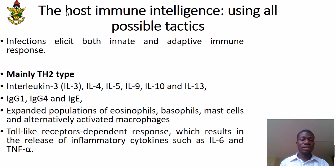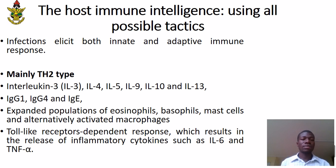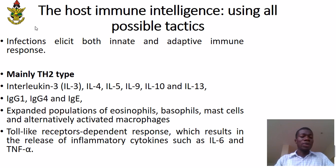Filarial infections are able to elicit both innate and adaptive immune responses. They elicit mainly the TH2-type immune response, with increased production of interleukins 3, 4, 5, 9, 10, and 13. Infections are also characterized by increased production of IgG1, IgG4, and IgE, and expanded populations of eosinophils, basophils, mast cells, and alternatively activated macrophages. Toll-like receptors have also been shown to play a major role in the immune response against these worms.